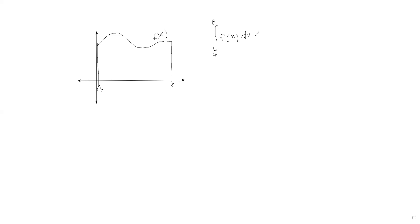The second fundamental theorem of calculus tells us the answer is going to be the antiderivative. Capital F is the antiderivative of lowercase f, so it's going to be the antiderivative when we plug in our high endpoint B, and then we subtract the antiderivative when we plug in our low endpoint A. This is how we find the area under the curve. But remember that before we can walk, we have to crawl. Before we know how to do integrals, we want to understand how to approximate the area under a curve. There's also a nitty-gritty technical limit definition of the integral, kind of like how with derivatives we have a limit definition.